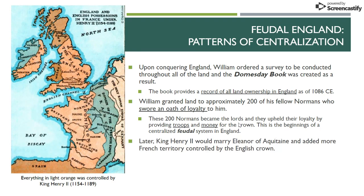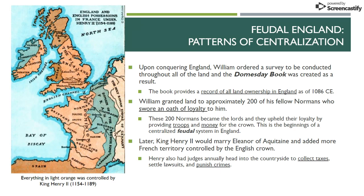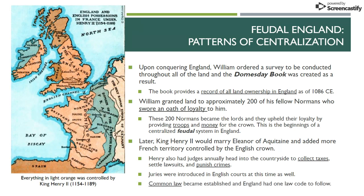Later under Henry II, a lot more French territory is going to be added to the English crown. Henry also had judges heading to the countryside to collect taxes, settle lawsuits, and punish crimes. So Henry began to centralize England a lot more than William and take a little bit of that power away from the nobles. One of the things that comes out in Henry II's time that's pretty important for the history of England is a system of common laws. Before, under William, lords were basically able to do whatever they wanted in their territory, but now there's a common system of laws established throughout England.